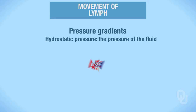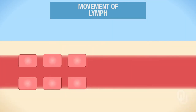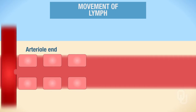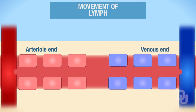Let's focus on the systemic end of the capillaries. Here are a few endothelial cells drawn in red that are lining the arterial end of your capillaries. On the other end, I'll use blue to illustrate the venous end of the capillary bed. We know that capillaries are only one cell layer thick, and each endothelial cell is separated from the adjacent cell via pores.